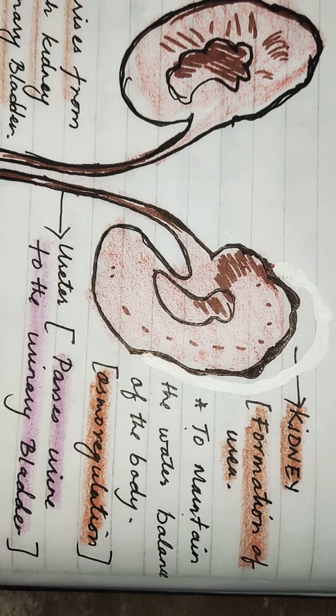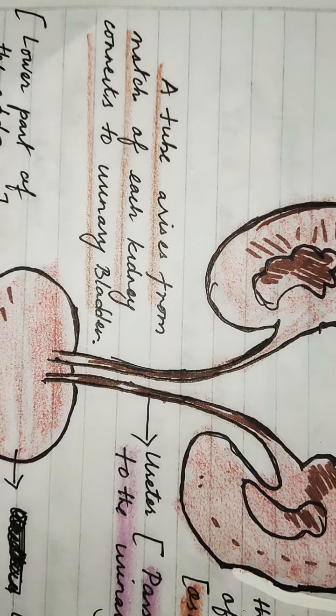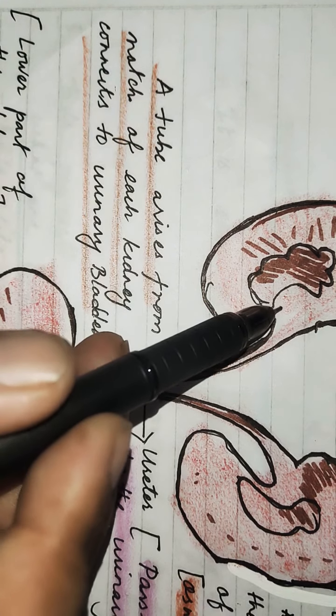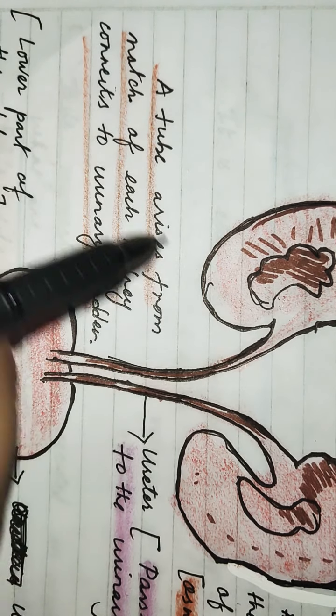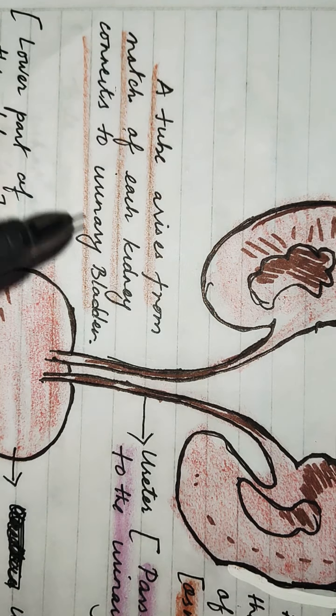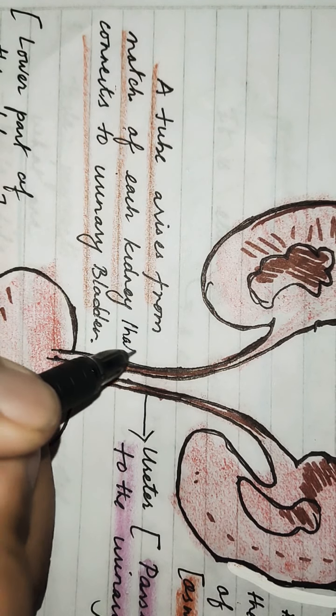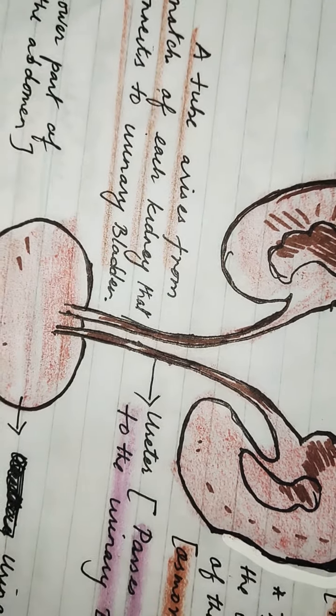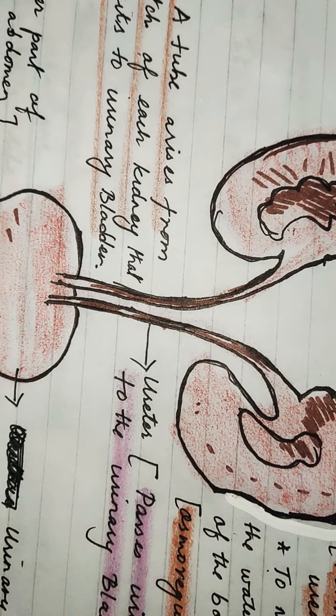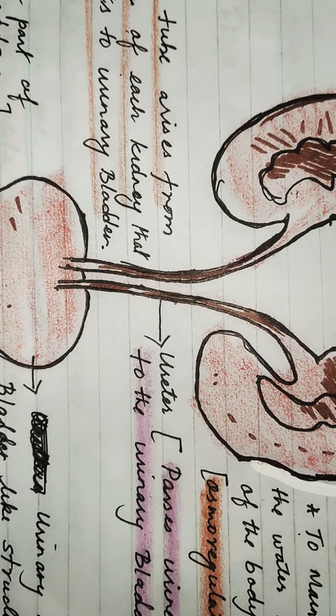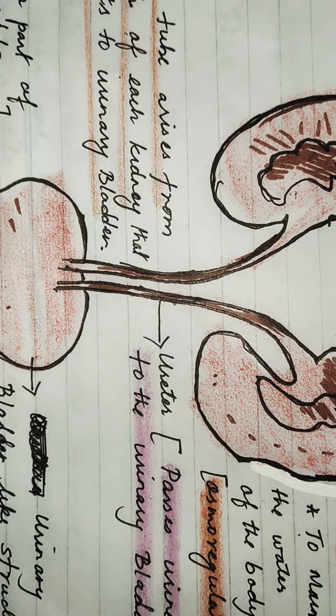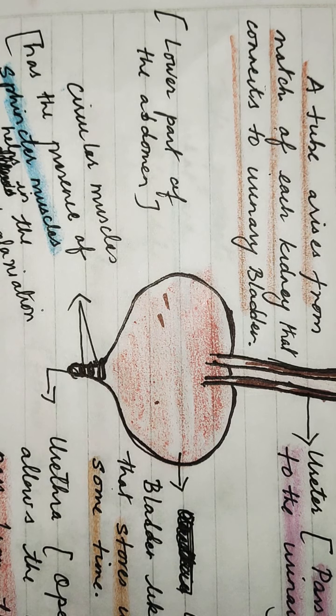From the kidney, a tube arises from the notch of the hilum of each kidney that connects to the urinary bladder — that is known as the ureter. The main function of the ureter is it passes urine to the urinary bladder.